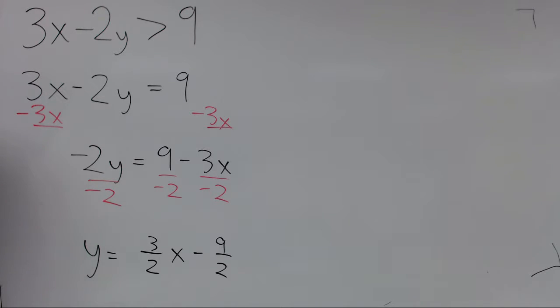And it's either a solid line in the case when the inequality has a less than or equal or greater than or equal symbol, or it's a dashed line if we just have a greater than or less than symbol.